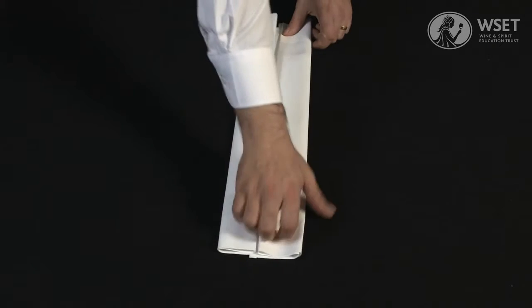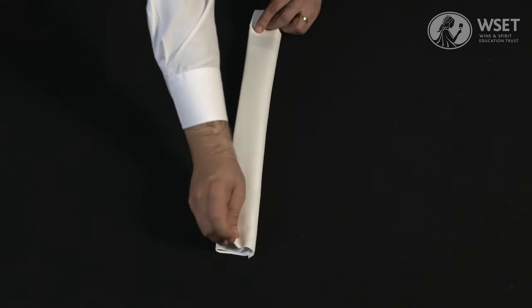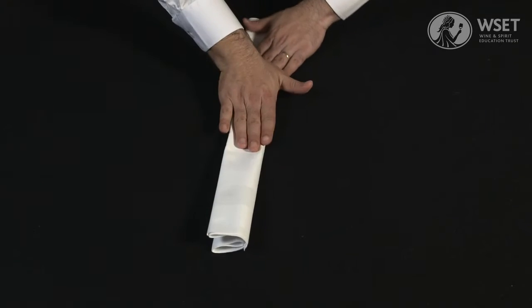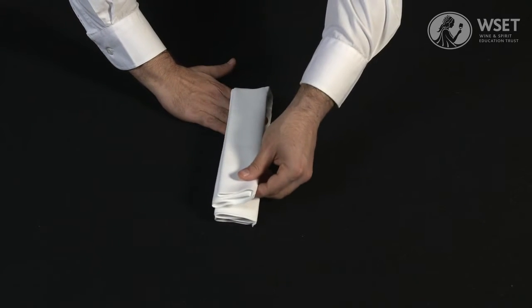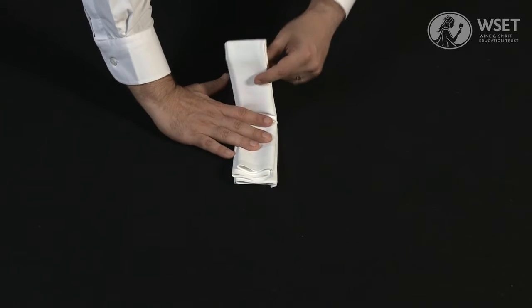The second option is to fold the cloth along its centre line and into a long strip. Now fold in half, and then half again.